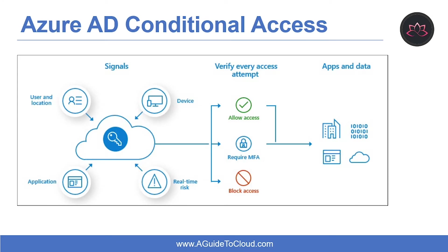Now let's understand what is Azure AD Conditional Access. Conditional Access is the tool used by Azure Active Directory to bring signals together to make decisions and enforce organizational policies. Conditional Access is at the heart of the new identity-driven control plane. It is a next-generation policy built for the cloud, able to consider massive amounts of contextual data from a user sign-in flow and make sure the right controls are enforced.